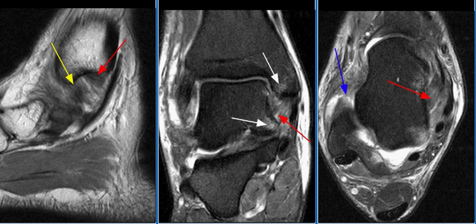Medial ankle sprains are less common than lateral ankle sprains and account for 10–15% of injuries. Patients are usually 15–35 years of age, presenting with anterior medial or medial pain and swelling with possible ecchymosis.